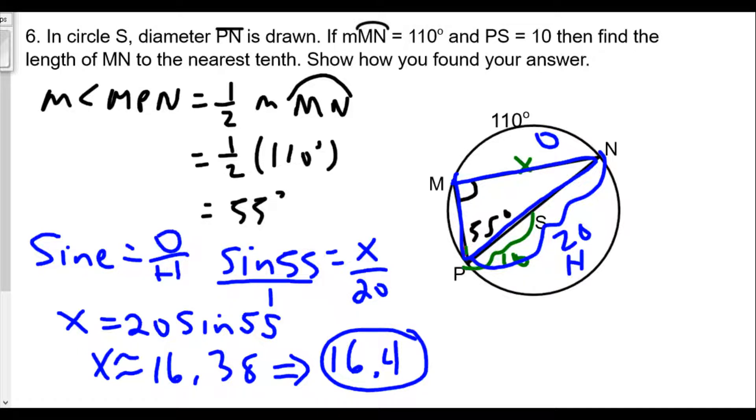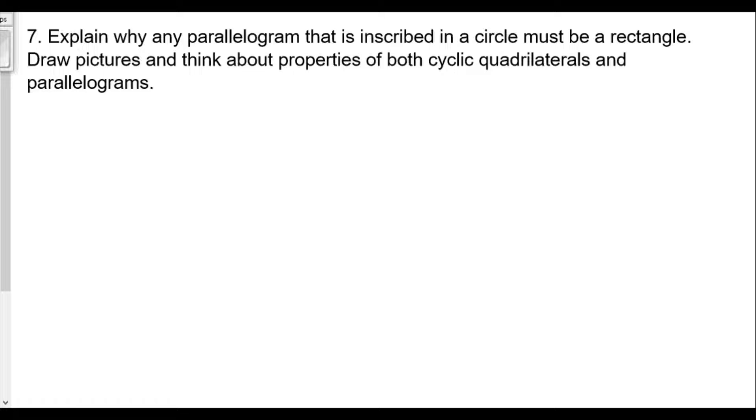So now for question number seven. Question number seven says explain why any parallelogram that is inscribed in a circle must be a rectangle. Draw pictures and think about properties of both cyclic quadrilaterals and parallelograms.